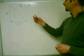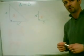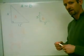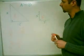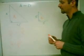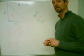So using similar triangles with their corresponding sides in proportion, we can solve for a missing side. Now let's go outside and see how this works in real life.